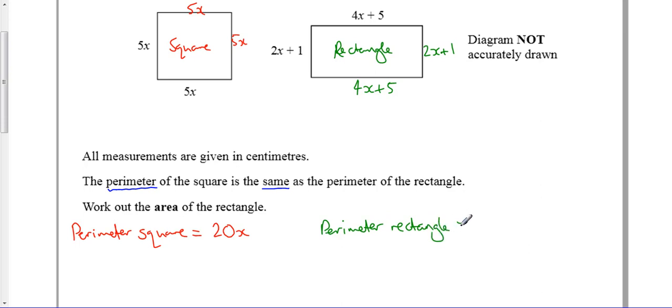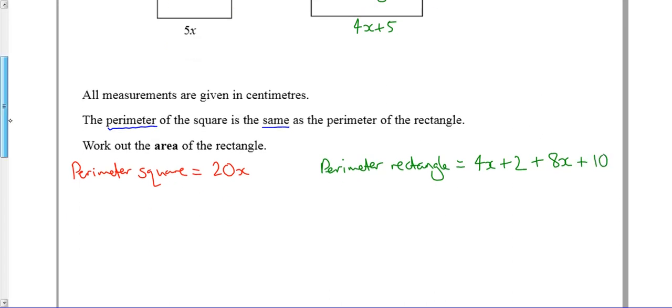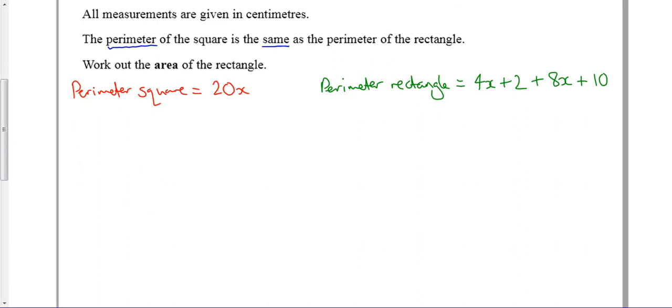To find the perimeter of the rectangle, I need to do 2x and 2x which is 4x, and 1 and 1 is 2. Also, 4x and 4x is 8x from the top and bottom, and 5 and 5 is 10.